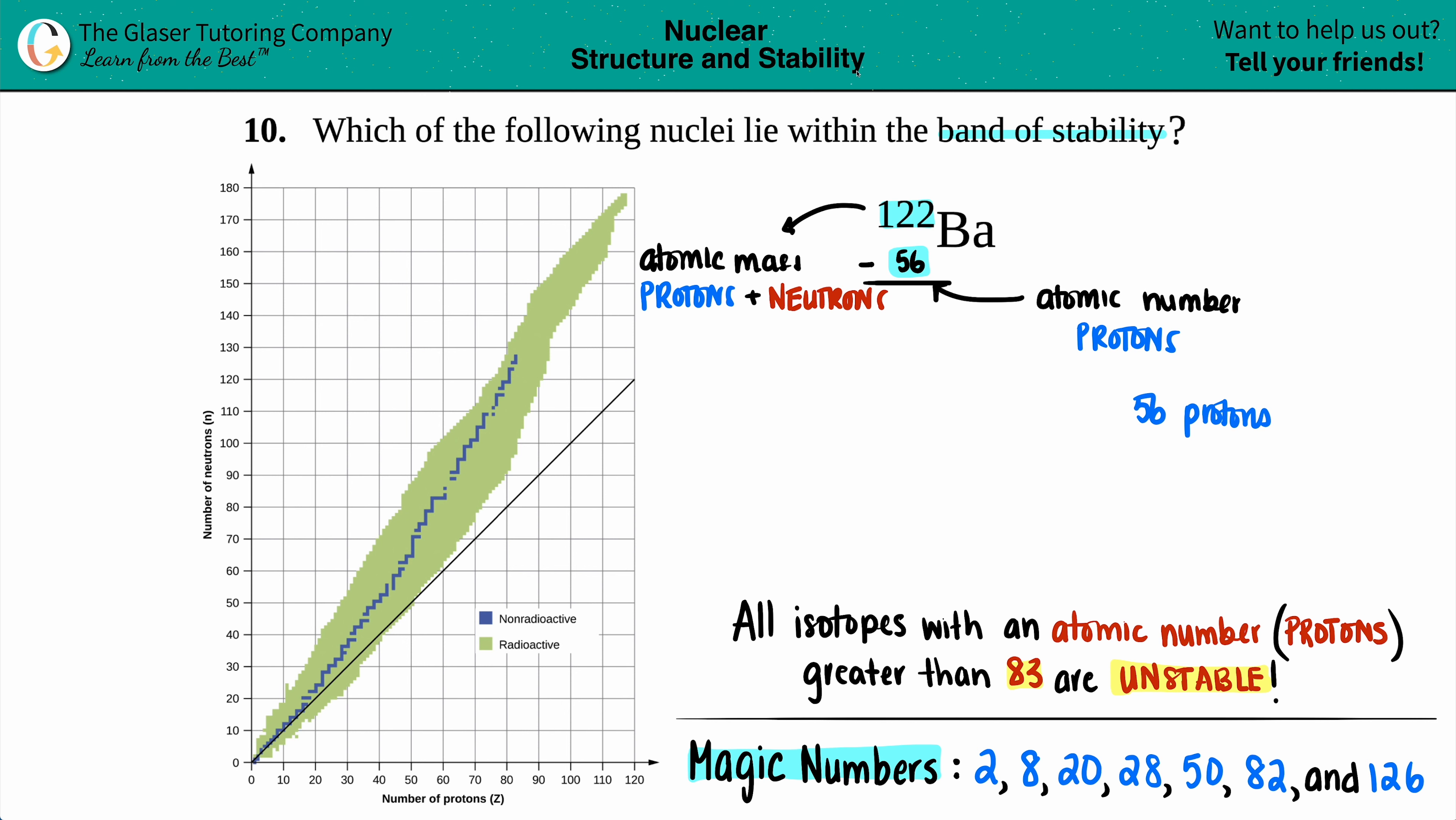So 122 minus 56. Let's see, 12 minus 5 is 7. We've got a 7. 2 minus 6 is a negative 4. So 70 minus 4 is 66. I'm just going to backtrack up just to make sure I did the right math. 66 neutrons. Let's see, 6 plus 6 is 12. Bring that number over. 5 plus 6 is 11, and then plus that 1. So yes, 66.